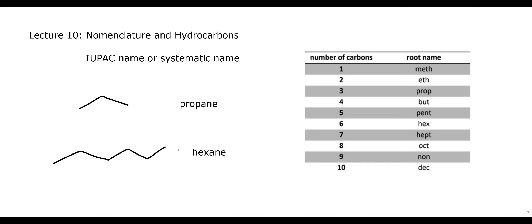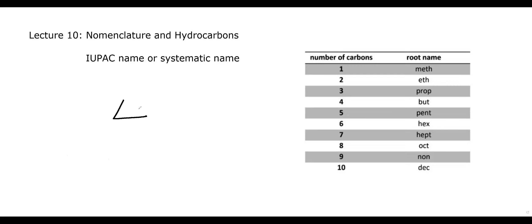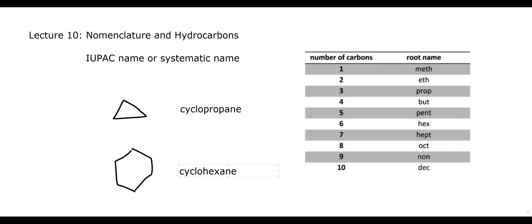What if these carbons are not a chain but part of a ring? All we do is add 'cyclo-' before the name. So a three-membered ring becomes cyclopropane instead of propane, and a six-membered ring becomes cyclohexane. We'll talk much more about cyclohexane shortly — the six-membered ring system is very important in organic chemistry. For naming ring systems, simply put 'cyclo' before the word.